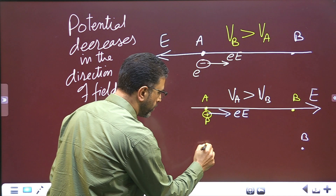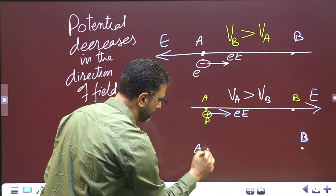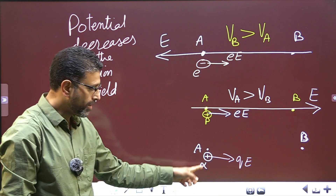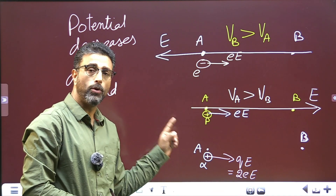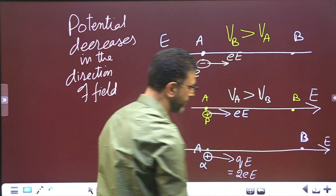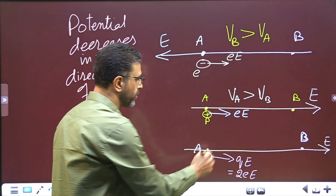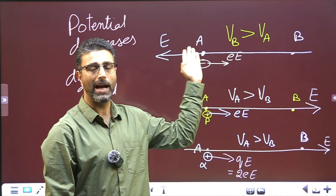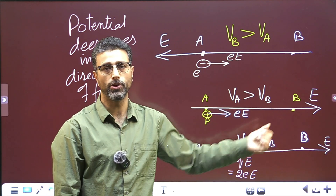In the third case we have an alpha particle — point A, point B. An alpha particle is again a positively charged particle. Force must be towards B. Charge of the alpha particle is 2e, so force equals 2e times E. Since it is a positive charge, it experiences force in the direction of the field, so the field must be rightward. Same as the proton case: A must be at higher potential and B at lower potential. So for electron: B is at higher potential; for proton and alpha particle: A is at higher potential.